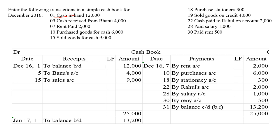So for cash also, we are recording the opening balance in the debit side. The opening balance will be recorded as 'balance brought down' and the closing balance will be recorded as 'carried down'. This is the opening balance, so we are using the word 'brought down'. We have to write the date — it is December 16th, 1st.